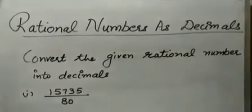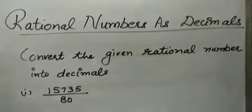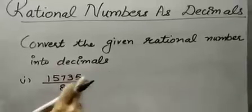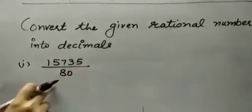Hello students, today in our e-lecture we will discuss the questions of brain teasers of chapter 3. Convert the given rational number into decimal. This rational number is given to us and we have to convert this rational number into decimal.